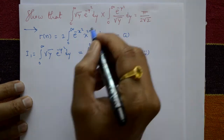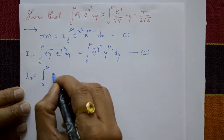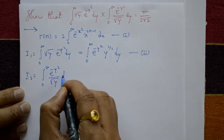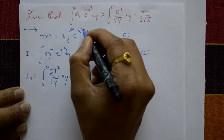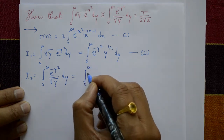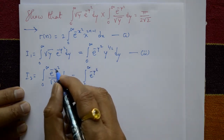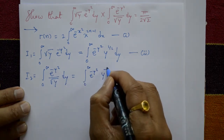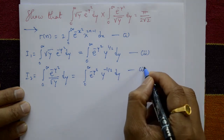Now take the second integral, I2: integration of 0 to infinity of e raised to minus y squared divided by root y with respect to y. Converting to standard form: integration of 0 to infinity of e raised to minus y squared times 1 over root y, which means y raised to minus 1/2, with respect to y. Call this equation number 3.